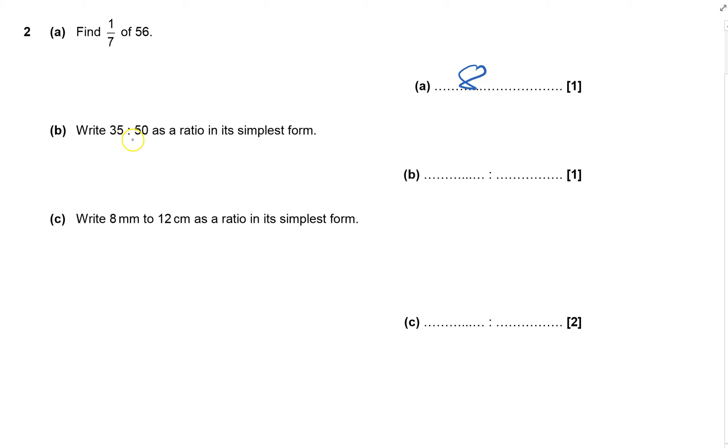I've got to write 35 to 50 as a ratio in its simplest form. So I can divide - what goes into both of these? Well, 5 goes into both. So I'll divide each by 5, and that gives me 7, and 50 divided by 5 is 10. Nothing else goes into 7 and 10 apart from 1, so that's 7 to 10.